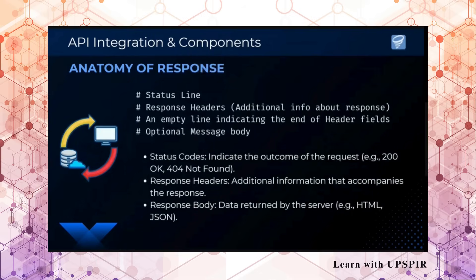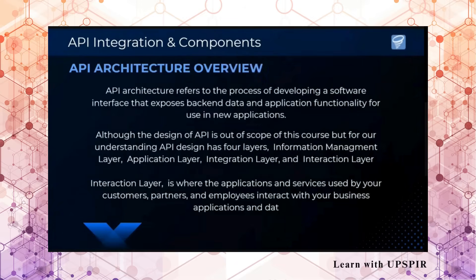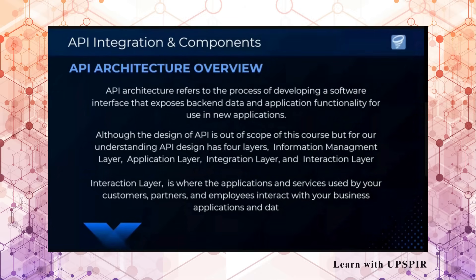The response is a similar HTTP response. There is a status line in which we indicate whether the request was OK or not — if there is an error, it will give an error. Then we have response headers, which is additional information about the response. Then we have the body in which the response data will come. If I had to save information, it will say it is saved and provide the ID. If I have to retrieve some information, it will give me that information. Although in this course we are not going to design APIs, we are taking a glimpse to have a clear picture of how the integration is happening.